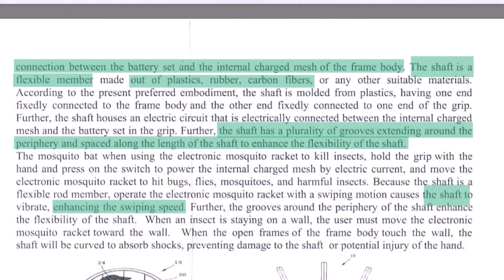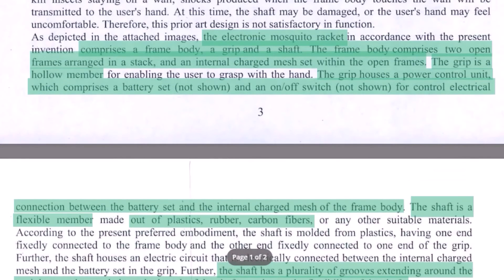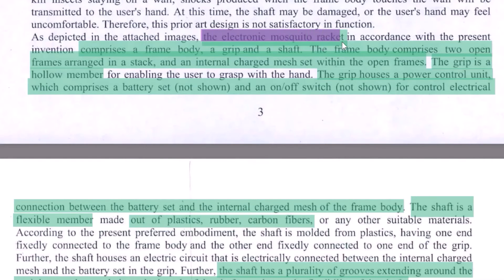Let's go to the last section, which is the abstract. As always, we go to the section of this document that provided us with the summary and the claims. In this small disclosure, this is where we obtained the summary from. So we start with: 'The invention provides an electronic mosquito racket...'